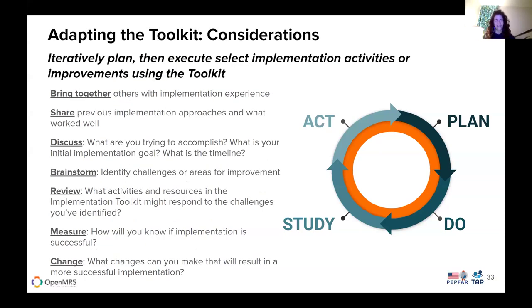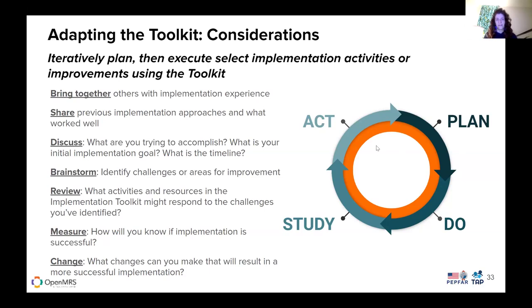Other considerations for adapting the toolkit: iteratively plan and then execute select implementation activities or improvements using the toolkit, making sure to bring together anyone with implementation experience. Share previous implementation approaches that worked well. Discuss and make clear what your goals are, what you're trying to accomplish, and what the timeline is. Use this to brainstorm and identify challenges or areas of improvement. Review what activities and resources in the toolkit might respond to those challenges, measure how you will know if implementation is successful, and what changes can result in a more successful implementation.